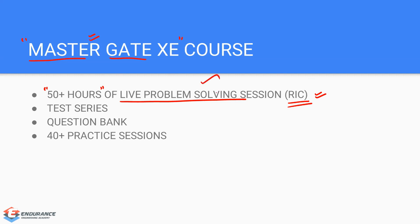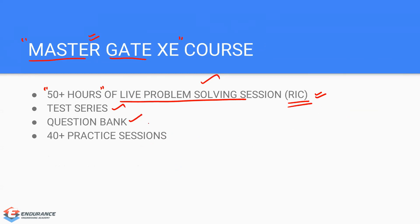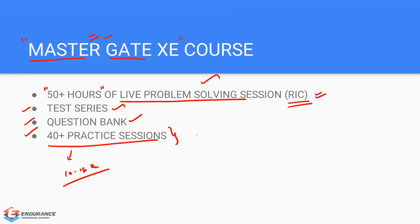If you register for the Master GATE XC course, the live problem-solving sessions are included, along with the test series (approximately 1273 questions) and the question bank (1000+ questions). In addition, we separately conduct practice sessions with 10 to 15 questions each, and those practice sessions are also accessible to Master GATE XC students. So in total, across practice sessions, question bank, and test series, you get more than 2500 questions. Each component has different and unique questions.